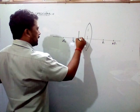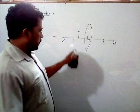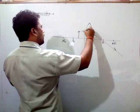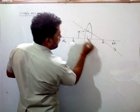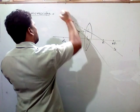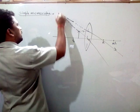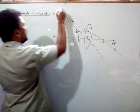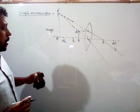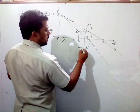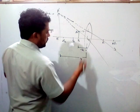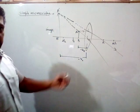Whenever any object is placed between the focal point and the optical center, its image forms on the same side as the object. The object length is U (negative) and the image length is V. Both U_E and V_E are negative because both lie on the left side.